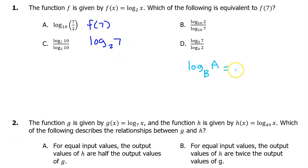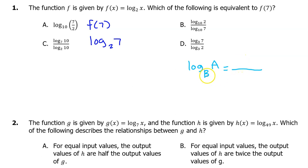The change of base formula tells us that we can rewrite a single log as the quotient of two logs. We will have the log of b and the log of a — we just need to remember which one goes in the numerator and which one goes in the denominator. It helps to think that the base b is low, so log b will end up in the denominator. The other one, log a, will be in the numerator.